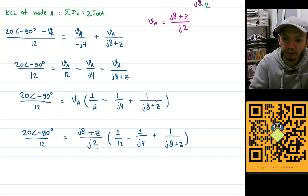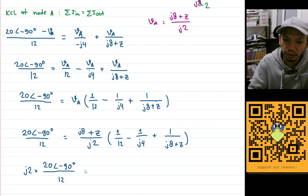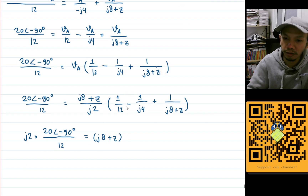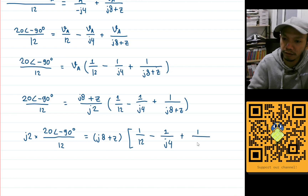Let's move j2 to the left-hand side: j2 times 20 angle minus 90 degrees divided by 12 equals (j8 plus Z) times the quantity: 1 over 12, minus 1 over j4, plus 1 over (j8 plus Z). We can simplify — j2 divided by 12 gives a factor of 6. So on the left we get j times 20 angle minus 90 degrees divided by 6.